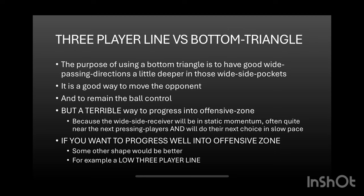But if you want to progress to the offensive zone, the bottom triangle is a terrible way to do it, because the wide side receiver in the pocket will be in a static momentum. Often the player will be positioned quite near the next pressing players and will need to make their next choice with the ball at a slow pace, which means defending is rather easy. If you want to progress better into the offensive zone, some other shape — for example a low three-player line that fills those same desired positions with motion — might be a better option.